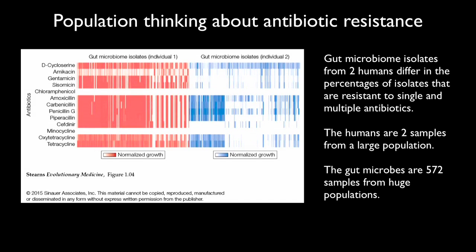In this microbiome data, every vertical line is a particular bacterium and every horizontal row is a particular antibiotic; the intensity shows how well that bacterium grows in the presence of that antibiotic. The two humans differ, showing variation in the human population in their microbiota. The most striking thing is that neither of these two humans had been using antibiotics recently, and nevertheless they each contained hundreds of different bacteria resistant to multiple antibiotics.